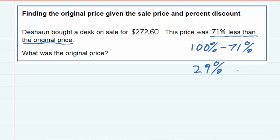Now I can turn that into an equation because I know how much Deshawn paid. He paid $272.60 and I know that $272.60 is 29%, but I'm going to want to convert that to a decimal, so 0.29, 29% of the original price.